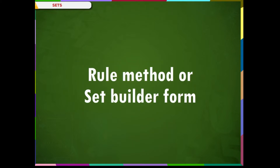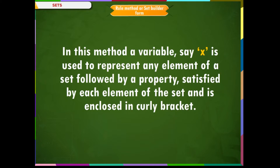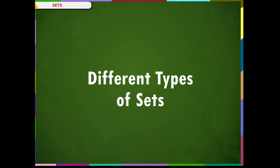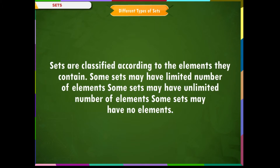Rule method or set builder form. In this method, a variable, say x, is used to represent any element of a set, followed by a property satisfied by each element of the set, and is enclosed in curly brackets. For example, A = {x such that x is a vowel of English alphabet}. B = {y such that y is a day of a week}. The symbols slash (/) and colon (:) denote 'such that'.